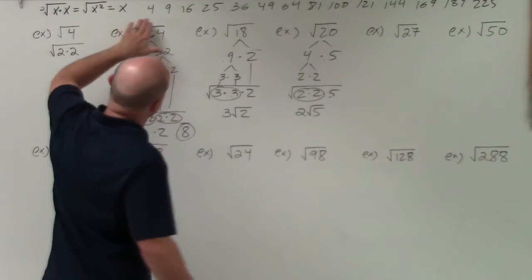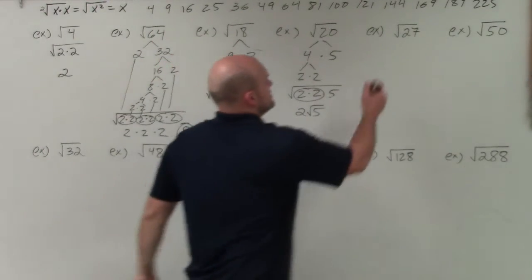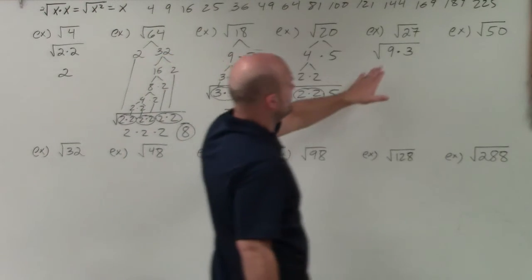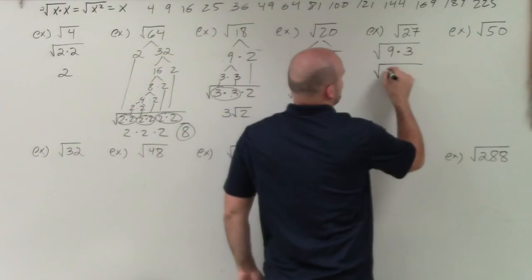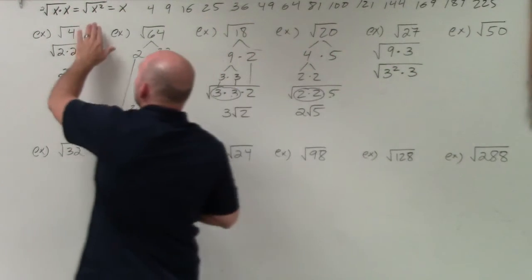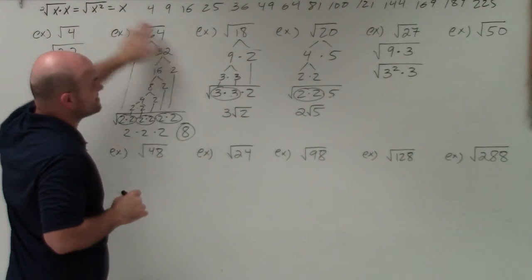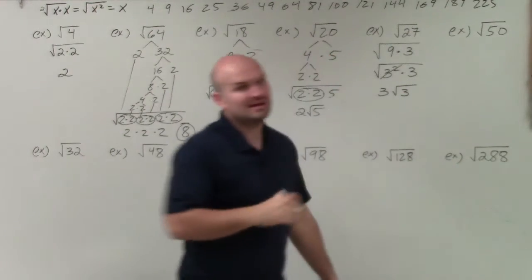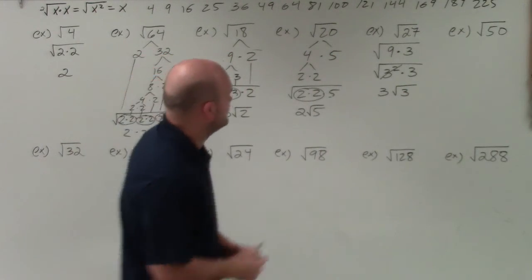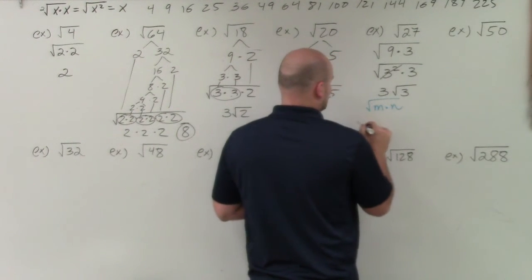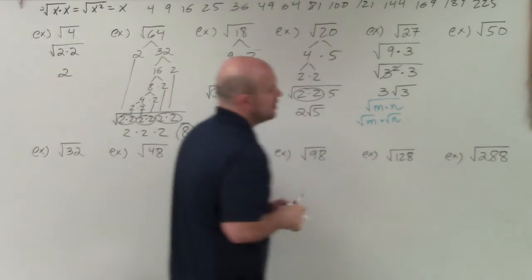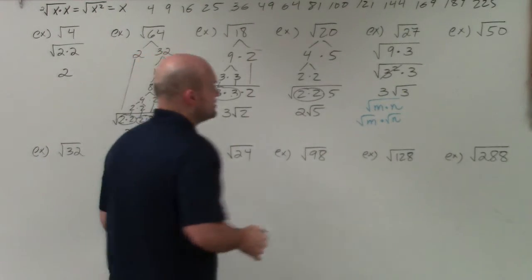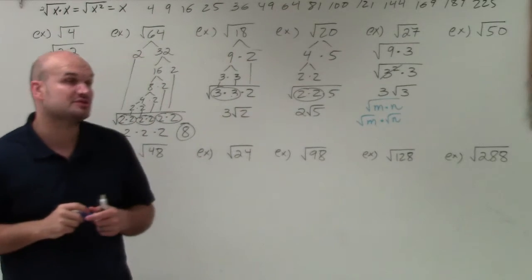For the square root of 27, I ask: do any of these square numbers divide into 27? Yes — 9 does. So I rewrite this as 9 times 3, which equals 27. I can rewrite 9 as 3 squared. Based on the identity element, the square root of 3 squared is just 3, and the remaining 3 stays under the radicand. Note also the product rule: √(m × n) = √m × √n, so I'm treating these as two separate problems: √(3²) × √3.